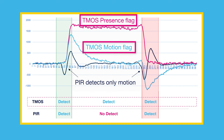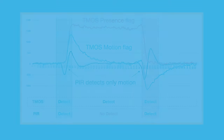In this same scenario, by using the TMOS sensor, it allows you to not only detect the motion of a human body, but also the presence of a human even in scenarios where a person is not moving, therefore removing the need to move in order to keep the lights on.